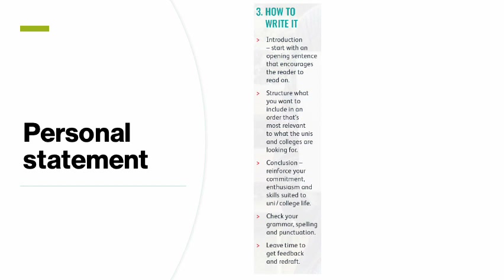Structure what you want to include in the order most relevant to the universities and colleges you're applying to. Most of the time, start with your subject studies, then your skills, then hobbies and community service. In your conclusion, reinforce your commitment, enthusiasm, and skills, and tell them how you can be a good asset to the university. Check for grammar and spelling — it must be perfect — and leave time to get feedback and redraft. Don't write at the last minute.